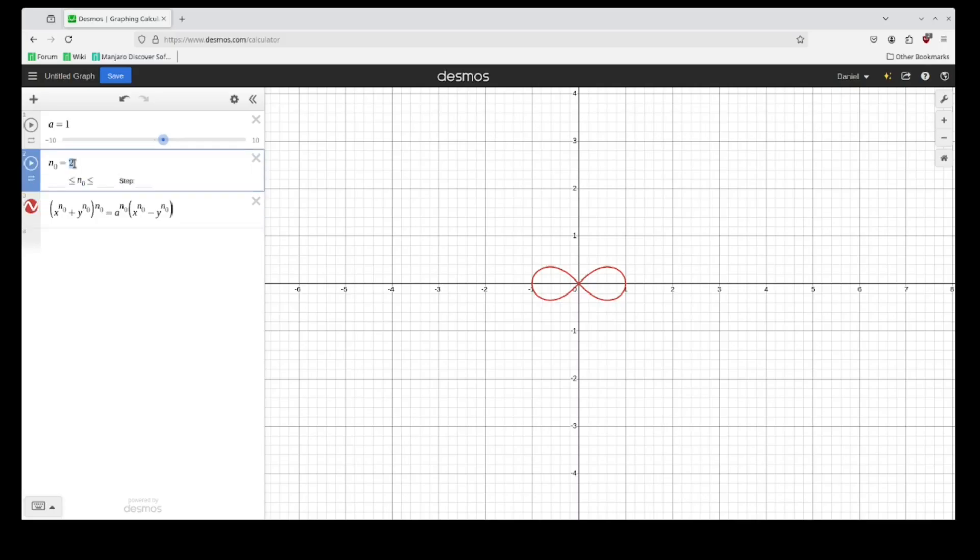And now if you increase this by even amounts, you can see that we're getting sharper turns here.